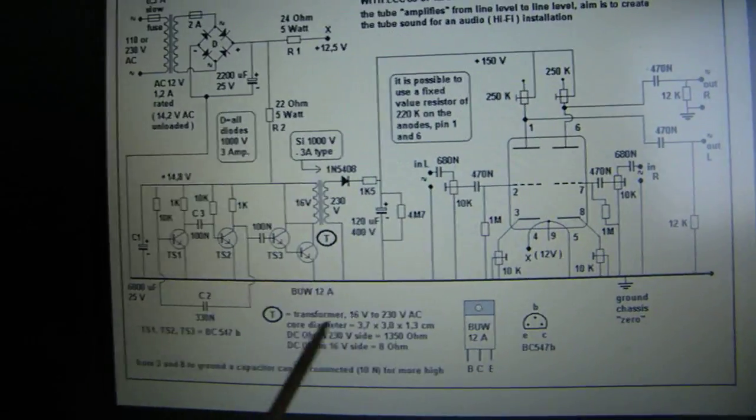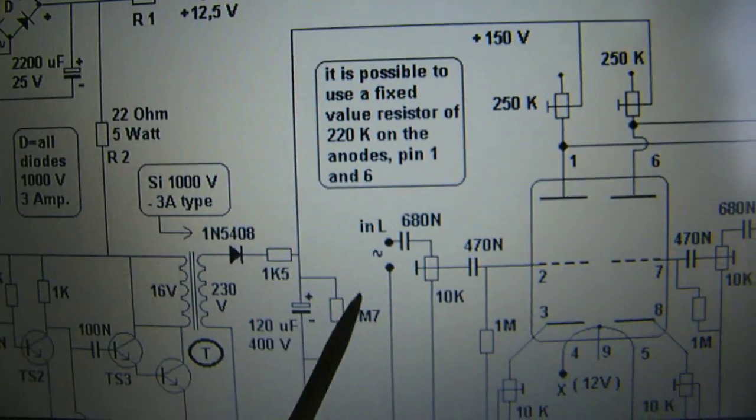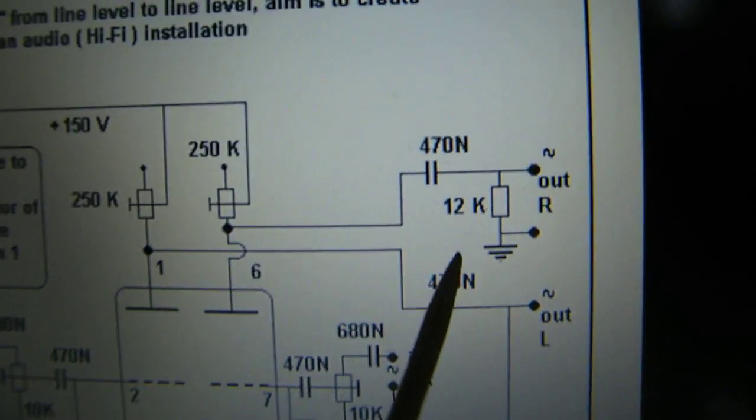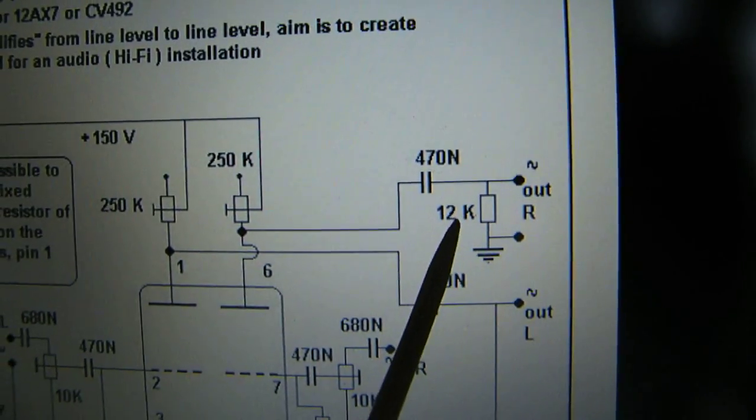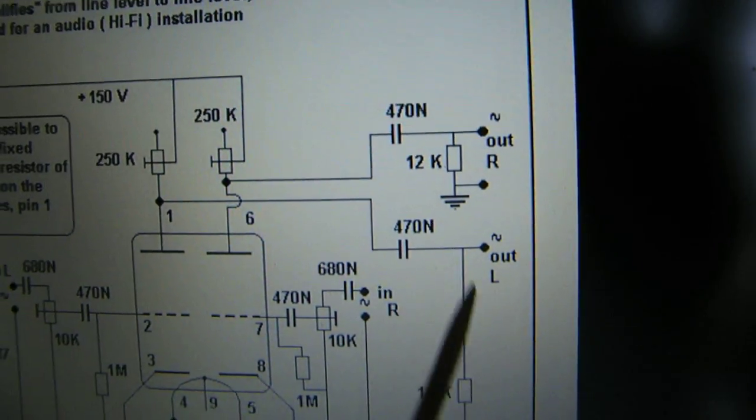So here is the input, say CD player, and here is the output and it's stereo. Output resistance 12,000 ohms for both channels, left and right channel.